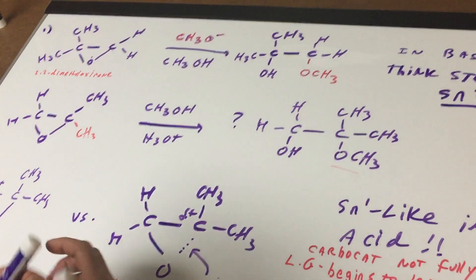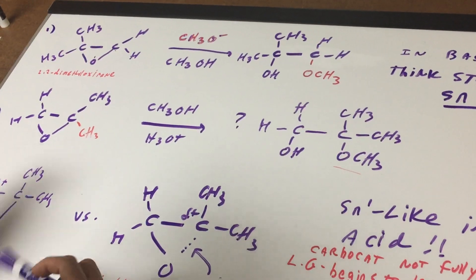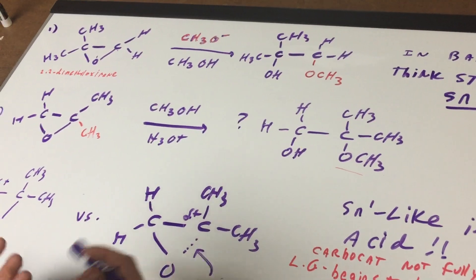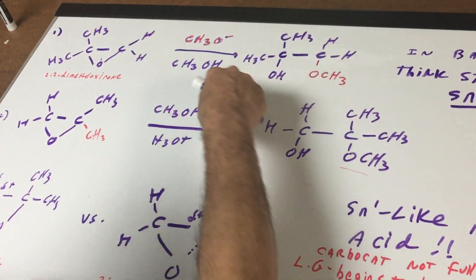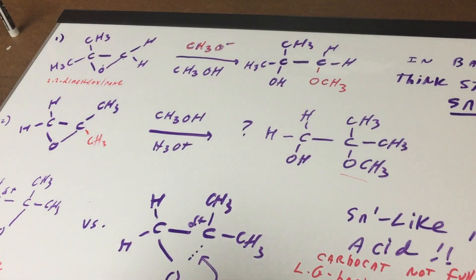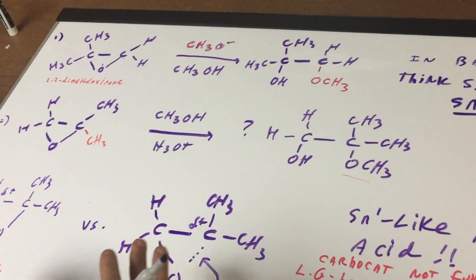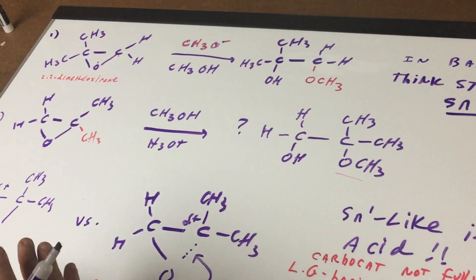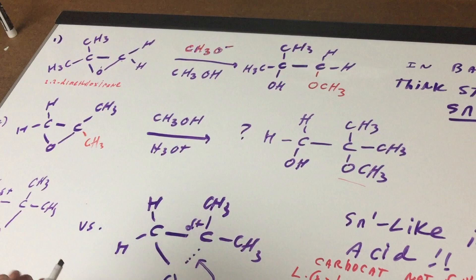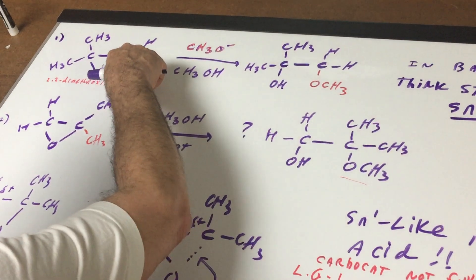Now the first thing we're going to do is when we're in base, and you can always tell if it's a base if there's no H3O or H plus written. Here there's just a minus written and this is the solvent. So in base, the rule is simple. We're going to simply do an SN2 reaction and we're going to attack that carbon that is least sterically hindered, and that would be this carbon here.